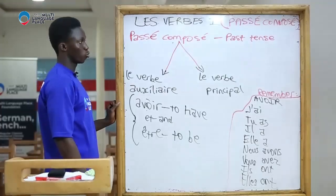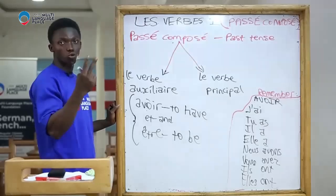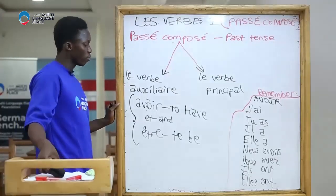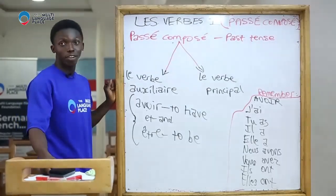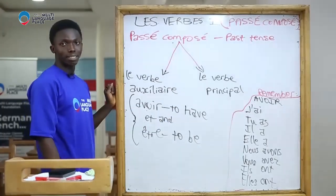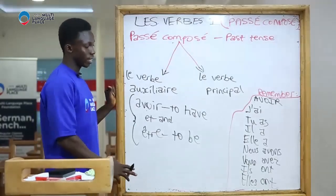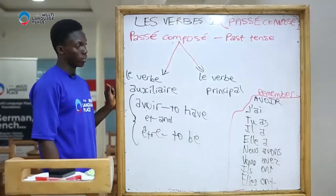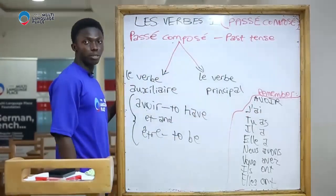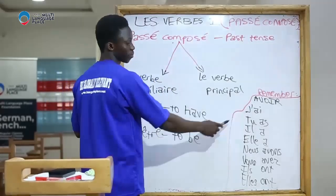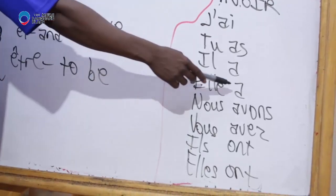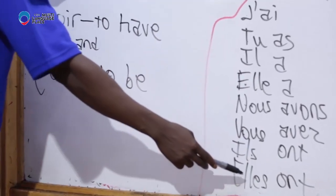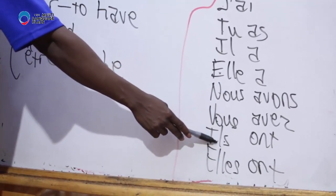Now, when do you know which to use? Keep in mind that for more than 85 percent of French verbs, we use avoir to express the passé composé. So in this class we are going to be using avoir for most verbs. The present tense of avoir is: j'ai, tu as, il a, elle a, nous avons, vous avez, ils ont, et elles ont.